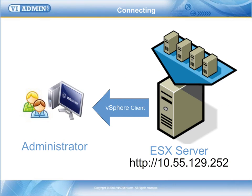The first thing we need to do is download and install the client. We did this in the previous movie by opening a web browser, typing in the IP address of our ESX server, and downloading and installing the vSphere client on a Windows 7 workstation.